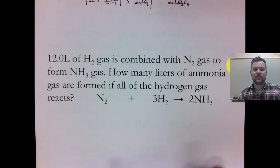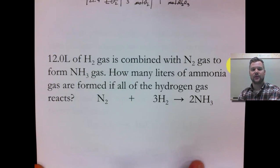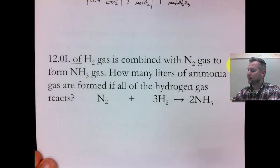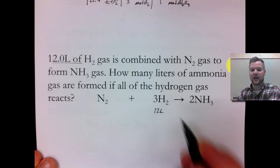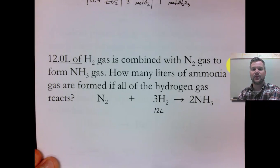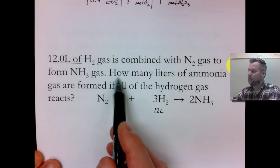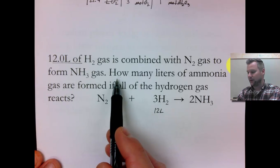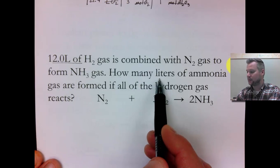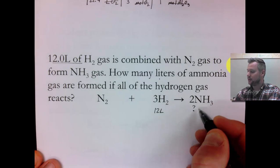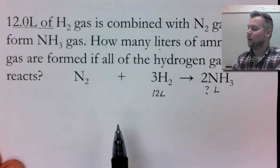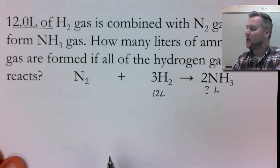This is a volume-to-volume stoichiometry problem where I'm being told I have 12.0 liters of H2 gas. I need to ID that. It says hydrogen gas, so I need to find that in my equation. 12 liters of hydrogen gas is combined with nitrogen gas to form NH3. How many — there's my question word — liters of ammonia. So question mark liters of ammonia. This is ammonia, so I need to make sure I figured out which gas I need to find information about: NH3.